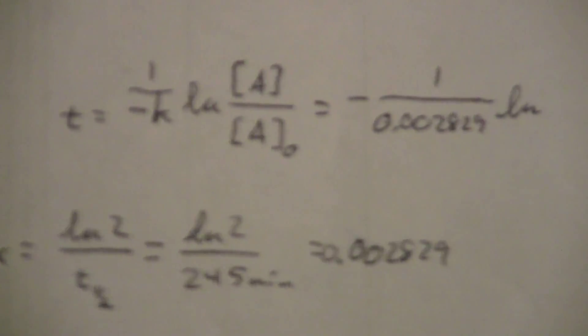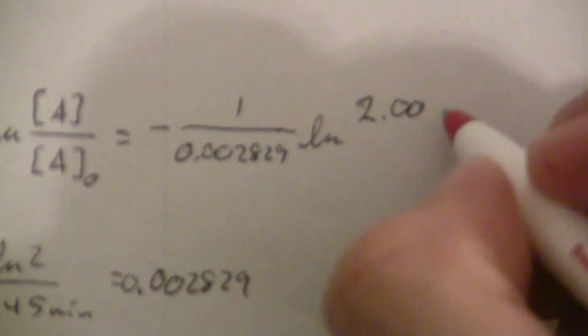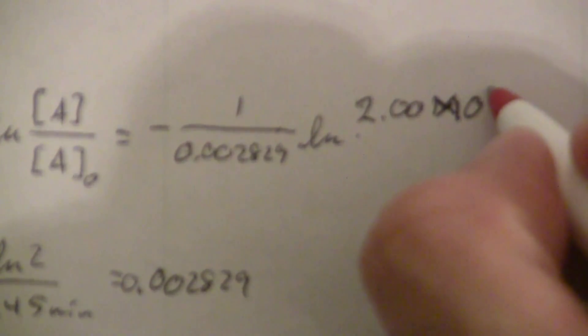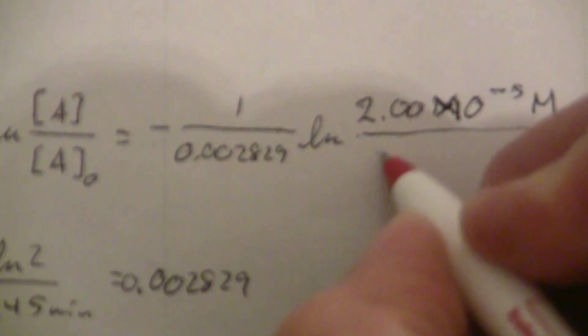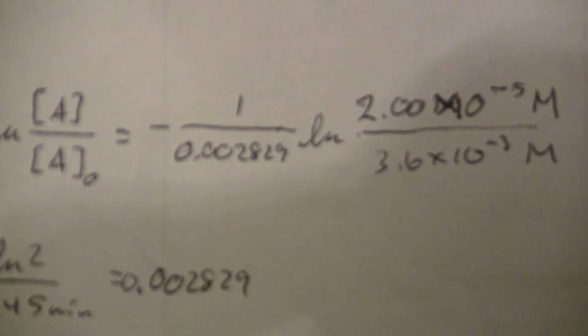So that's not for us, so where am I at here. Okay, so we have the current, the final concentration of 2.00 molar, sorry, times 10 to the minus 5th molar, divided by 3.6 times 10 to the minus 3rd molar.